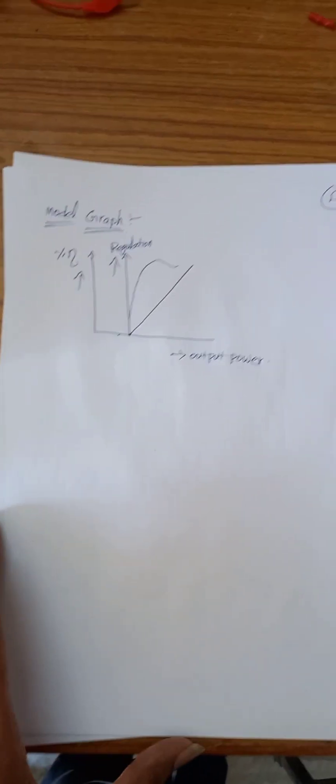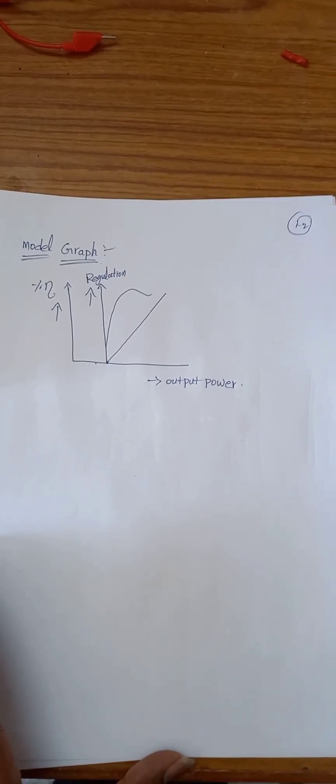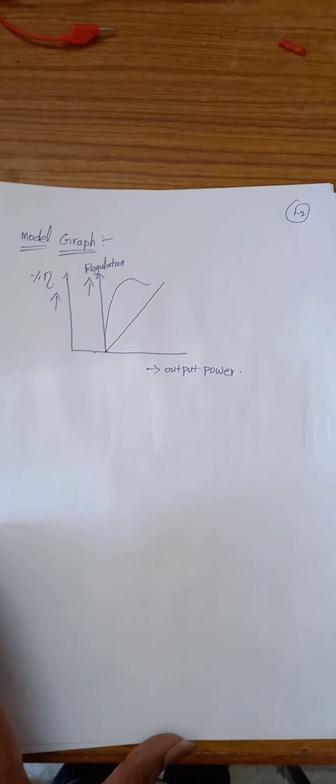Now draw the model graph using a graph sheet — efficiency versus output power, and regulation versus output power.